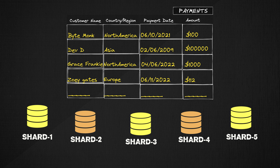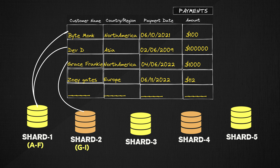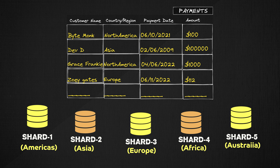We can shard this table based on customer name. Any payment from a customer whose name starts with a letter between A and F will go to shard 1, any from G to I will go to shard 2, and so on. Or you might split up the payments according to the region of customers — if a customer comes from North America, that row is stored in shard 1; if from South Asia, in shard 2, and so on.